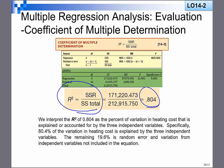And again, 0.804, that means 0.804 or 80% of the variation in heating costs, which is your Y, that is explained or accounted for by the three Xs or three independent variables. Specifically, 80.4% of variation in heating costs is explained by the three independent variables. The remaining 19.6, which is just 1 minus 80.4, gives you 19.6 is random error.